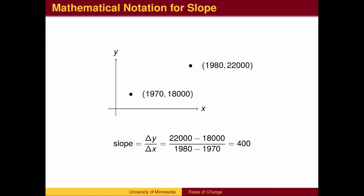In mathematics, we typically use the variables x and y, and the rate of change, called the slope, compares the change in y to the change in x.